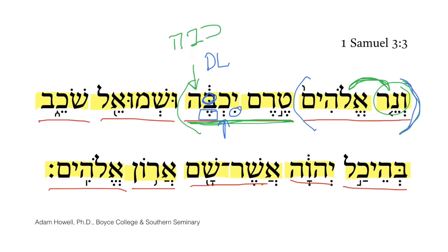The next clause adds to the initial clause with a vav conjunctive and the proper name Samuel, followed by the qal participle — a masculine singular absolute of the root shakav. As a pure substantive, we would read the participle as 'the one who was lying down.' However, in good English, it takes more of a verbal notion: 'and Samuel was lying down.' The accents, especially the ath-nach, are important for how this full translation ends up, and we'll look at those in a moment.